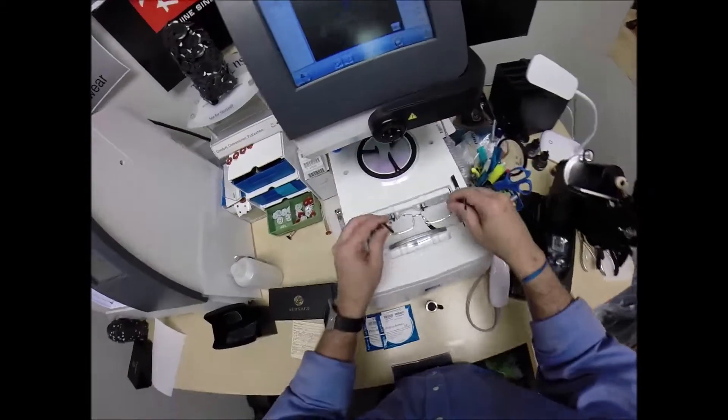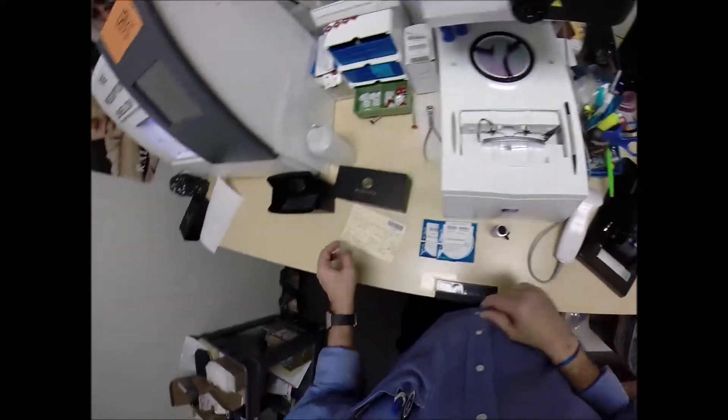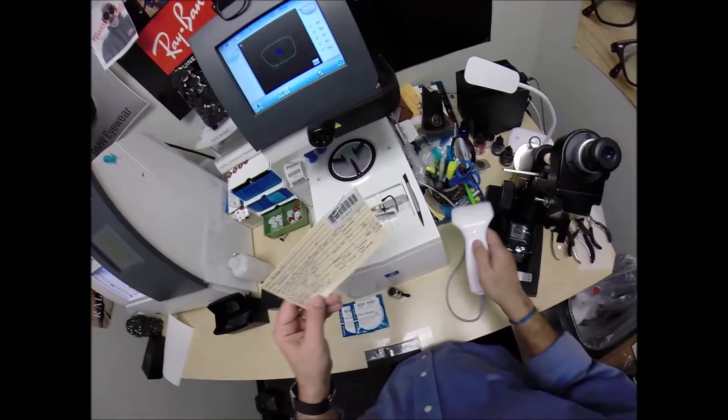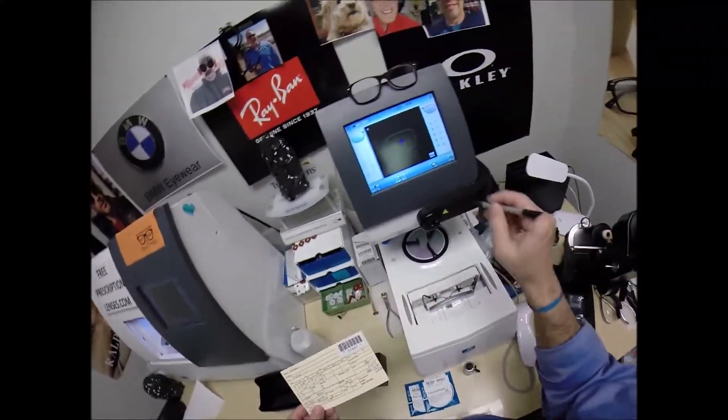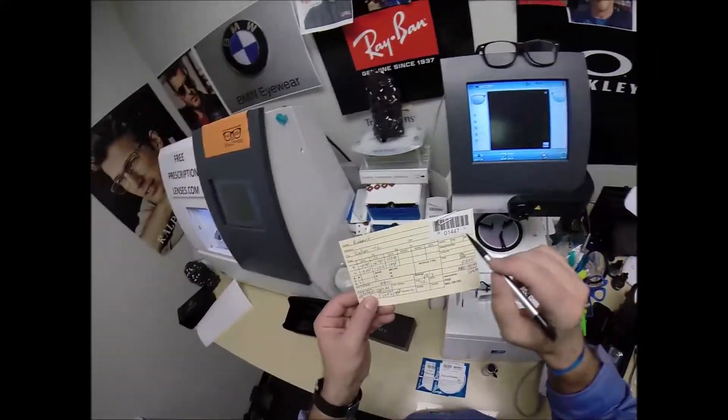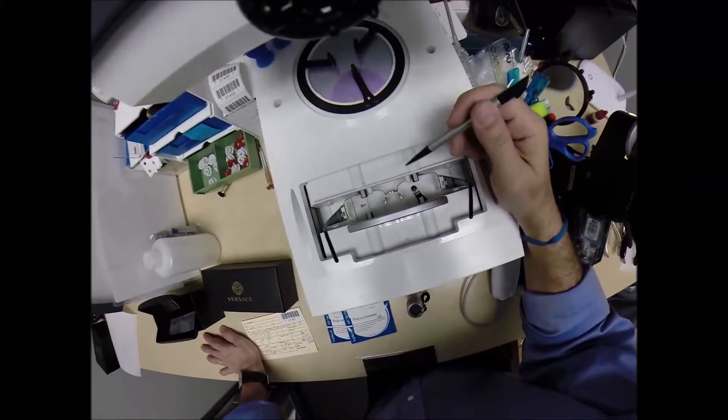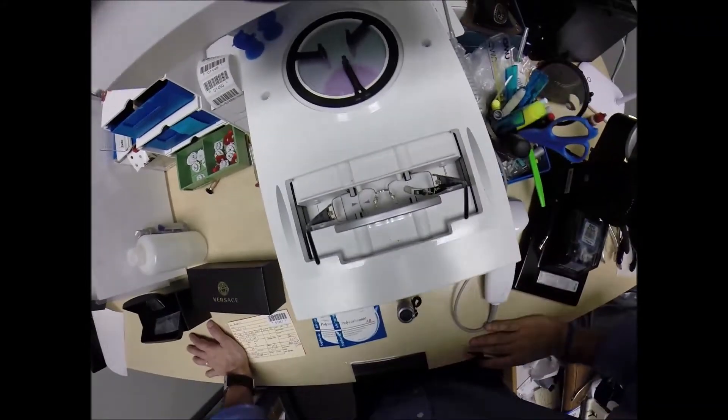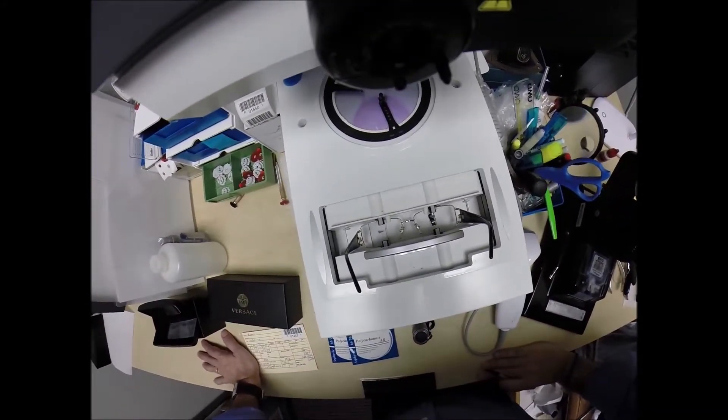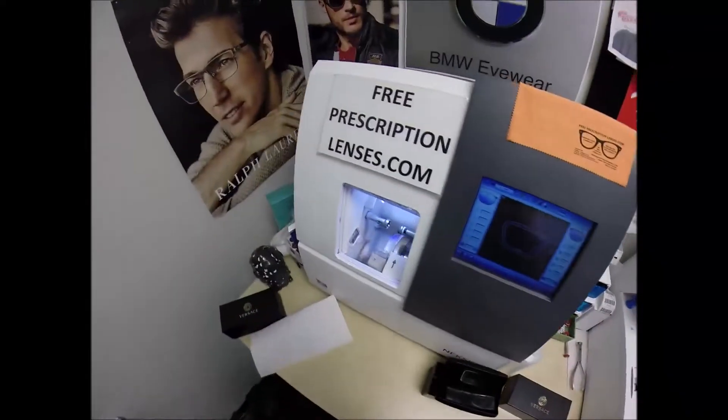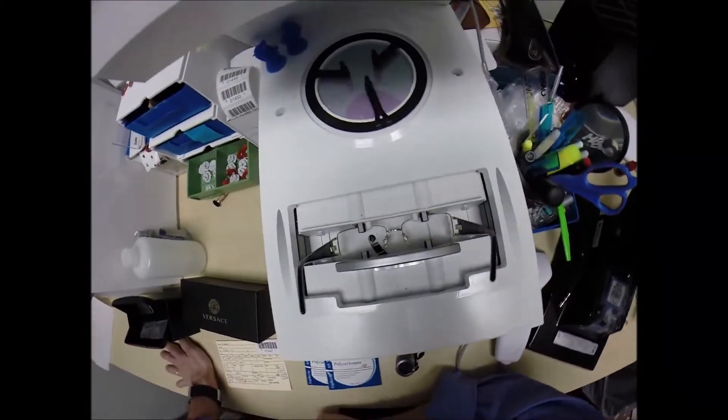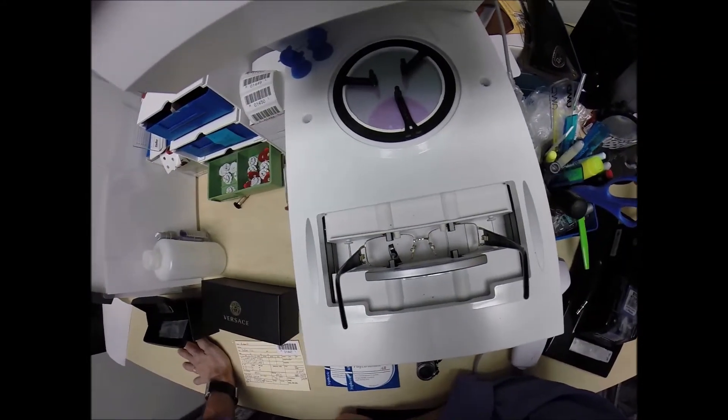So I'm going to put your frame into the tracing element of my blocker. And before I hit start, I'm going to program this shape into the computer, 1447. So years from now, should you ever need new lenses, they're programmed into the computer. And I can mail you just the lenses right to your home. And I'm going to show you how you can change them out years from now.